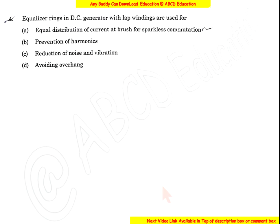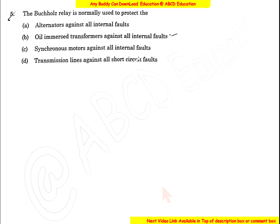Question 4: The equalizing rings in a DC shunt generator with lap winding are used for equal distribution of current. The equalizing rings are connected between the lap winding segments of the DC machine to ensure equal current distribution. The correct option is A.